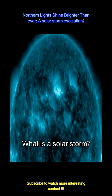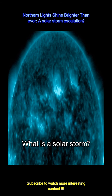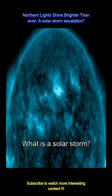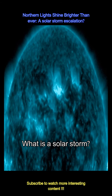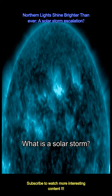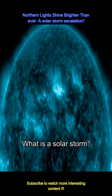A solar storm, driven by intense solar wind fluctuations, disrupts Earth's magnetosphere causing auroras and potential damage to technology infrastructure. These storms pose risks to communication systems and satellite operations.